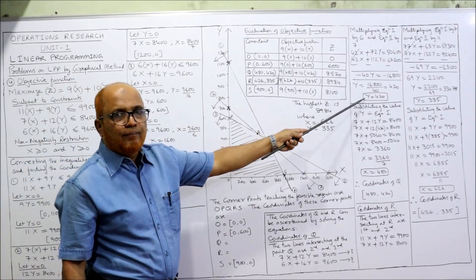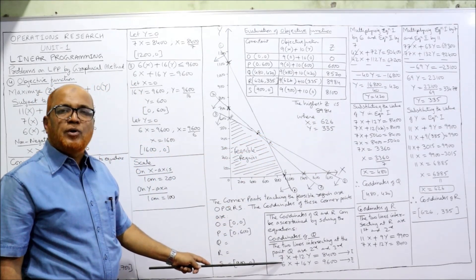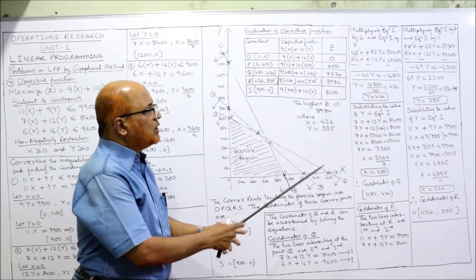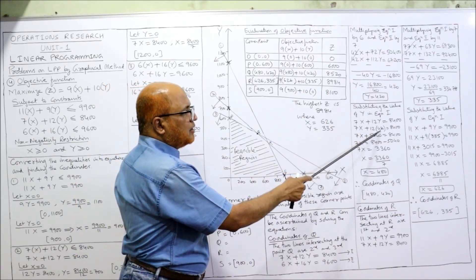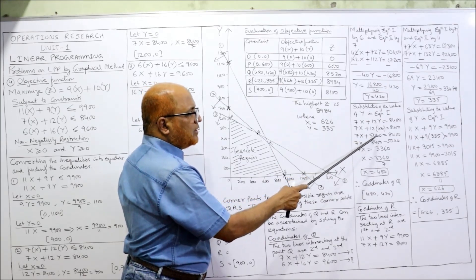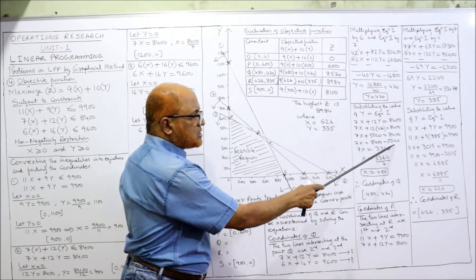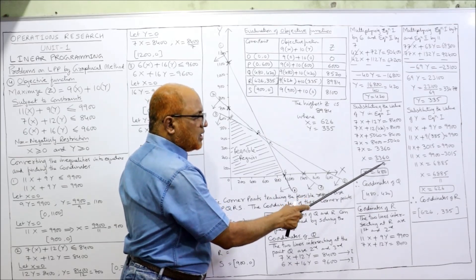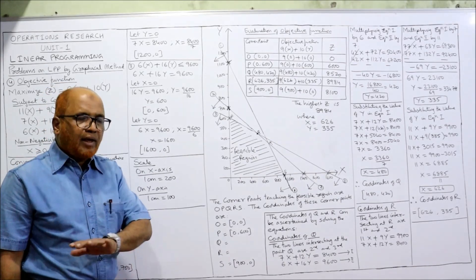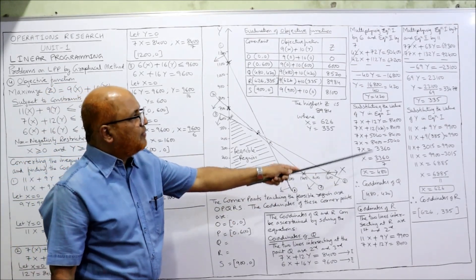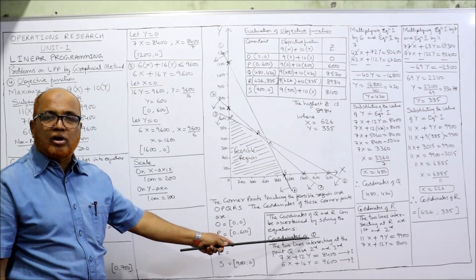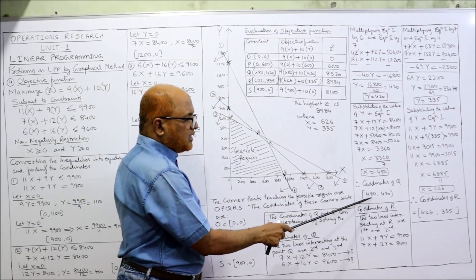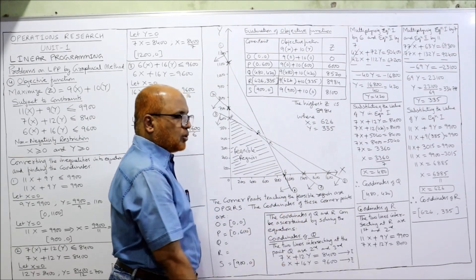Substituting y = 420 into the first equation 7x + 12y = 8400: 7x + 12 × 420 = 8400, so 7x + 5040 = 8400. Taking 5040 to the right-hand side: 7x = 3360, so x = 480. We got the coordinates of Q: x = 480, y = 420. So Q is (480, 420).